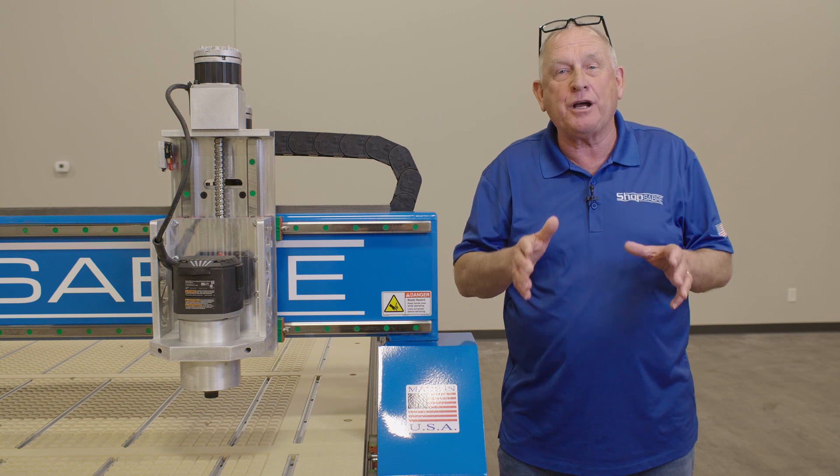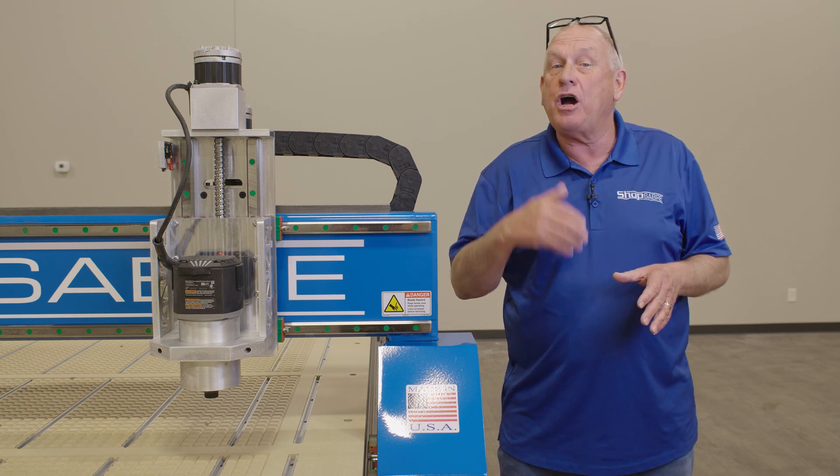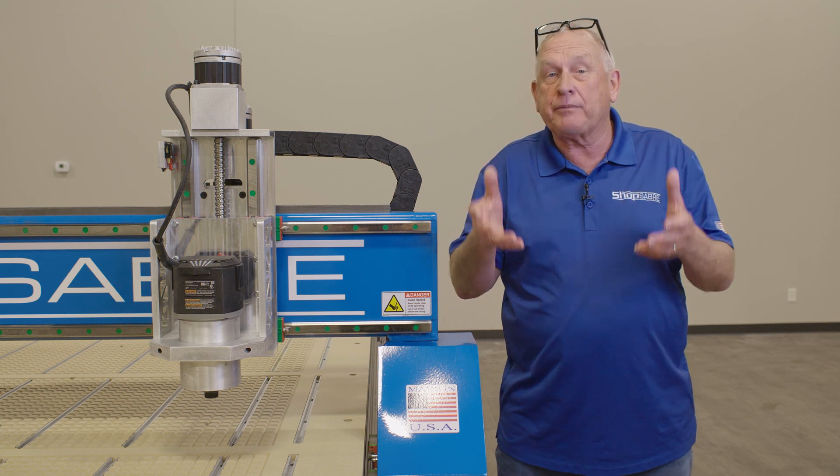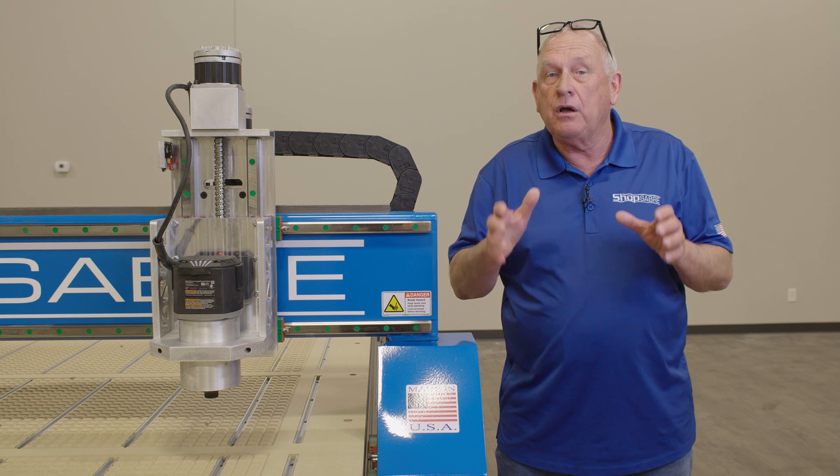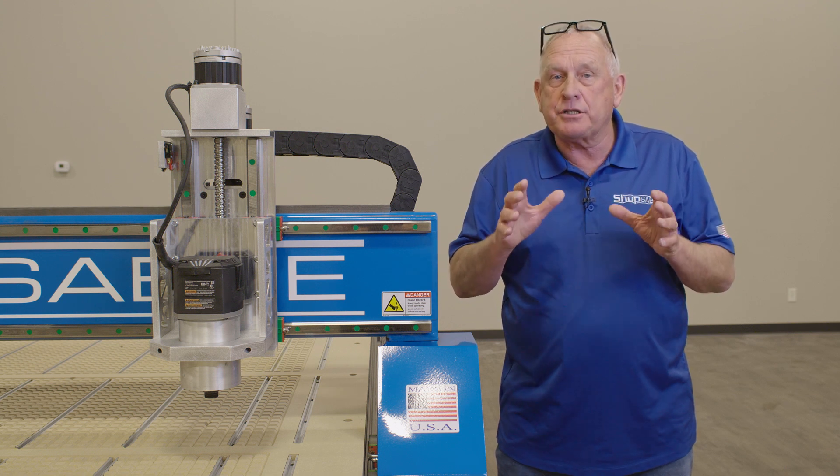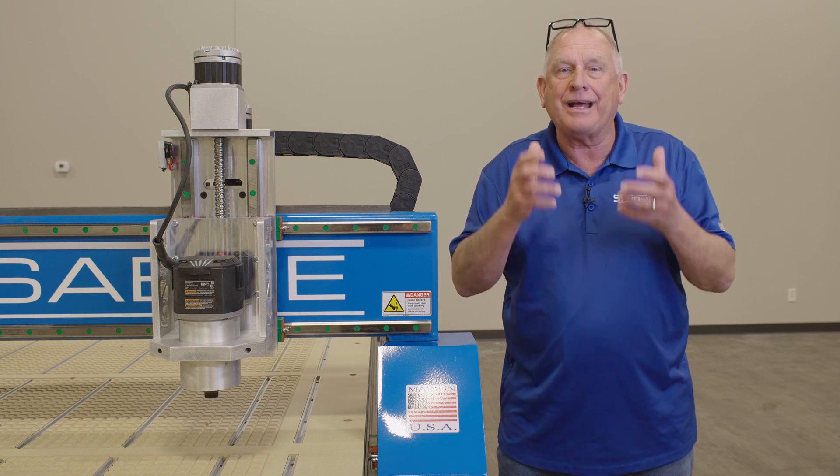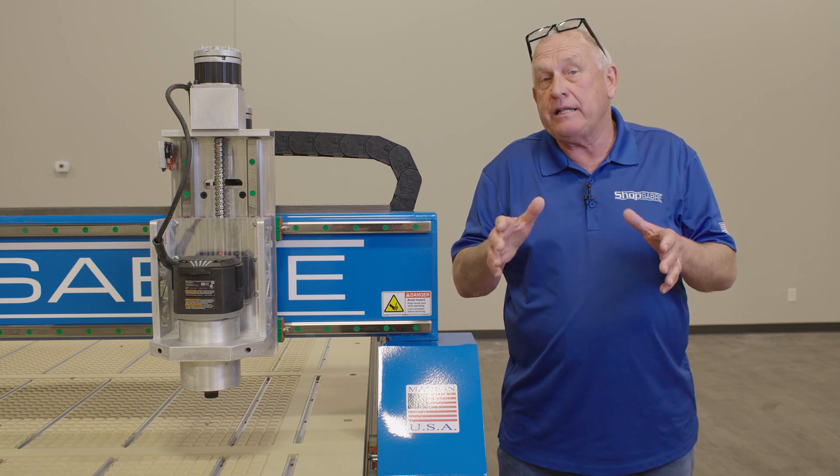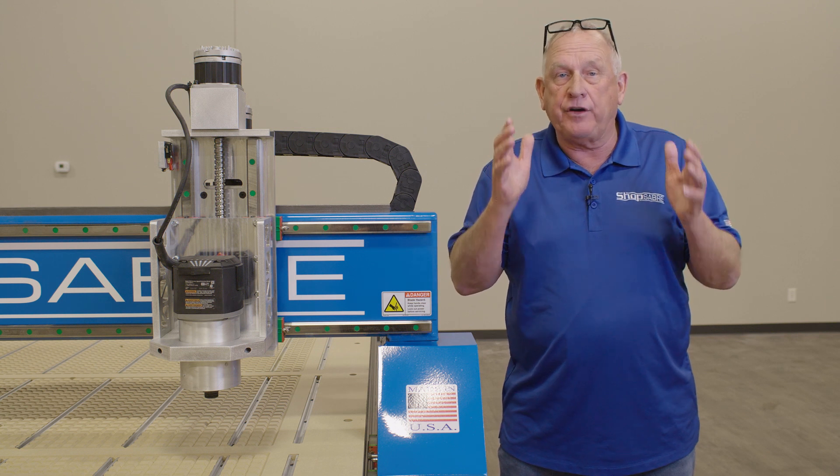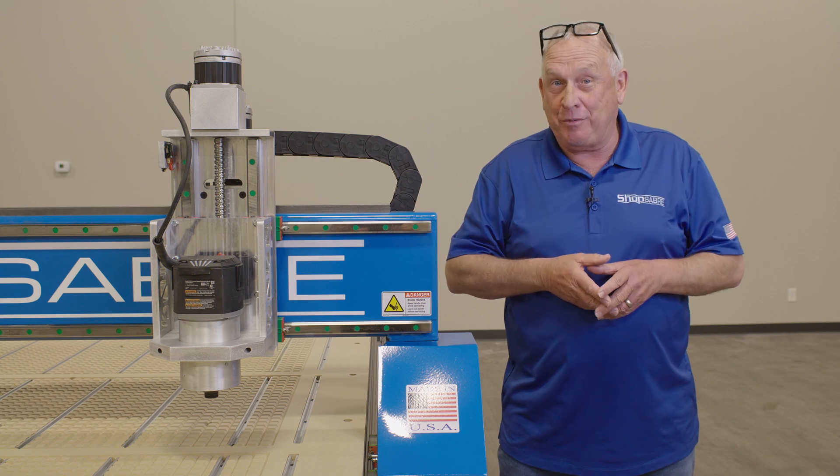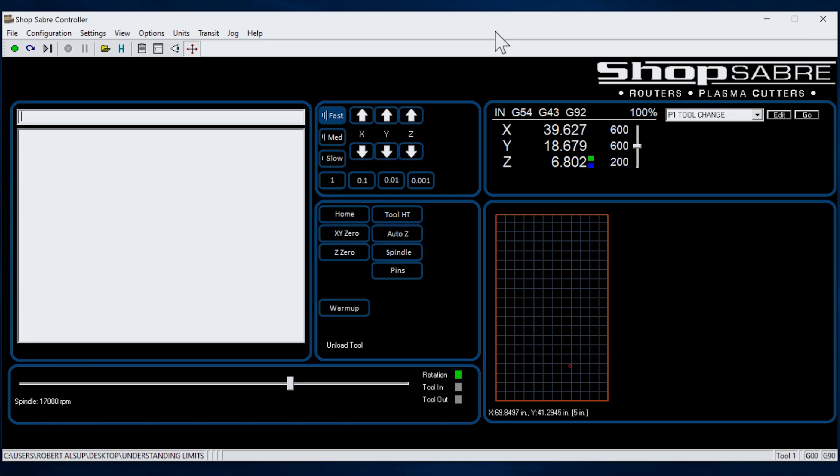There's part of machine operation that's people related. That's how the operator interfaces with the machine control. When we developed the ShopSaber CNC control, one of the main goals was to make it easy to train a machine operator. We strive to create a user experience that did not require an engineer type employee. And we did this without sacrificing either functionality or dependability. Let me show you how easy the control is to operate. We started by putting everything the operator needs to run the machine on a single screen. Let me show you how this is organized.